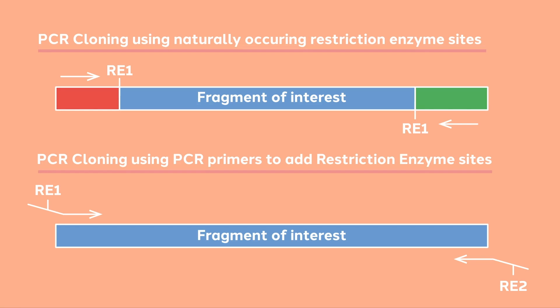A more flexible alternative is to add restriction enzyme sites to the ends of your PCR primers. This allows you to put the enzyme sites of your choice exactly where you want them.